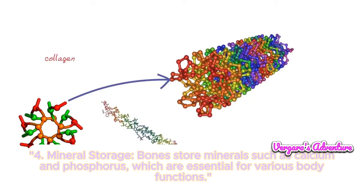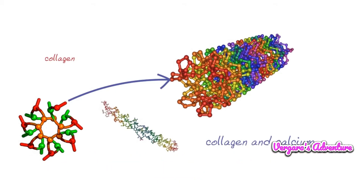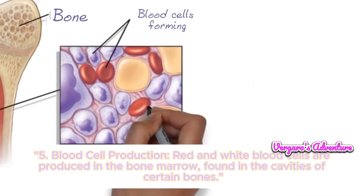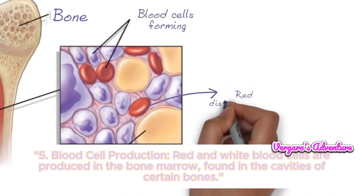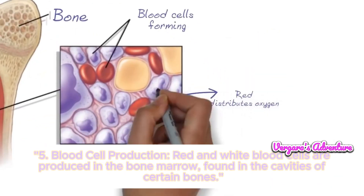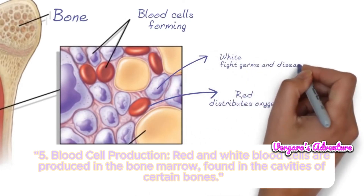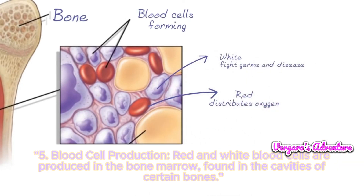Fourth, mineral storage: bones store minerals such as calcium and phosphorus, which are essential for various body functions. Fifth, blood cell production: red and white blood cells are produced in the bone marrow found in the cavities of certain bones.